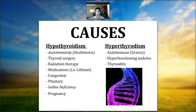Causes of hypothyroidism include thyroid surgery, radiation therapy to the area during cancer treatment, medications like lithium, pituitary issues affecting brain-to-thyroid communication, iodine deficiency, and pregnancy. For hyperthyroidism, causes include hyperfunctioning nodules — usually benign growths — and thyroiditis, which is inflammation of the thyroid gland. Iodine deficiency is the global cause of hypothyroidism in third-world countries, but in the United States most people are not iodine deficient.